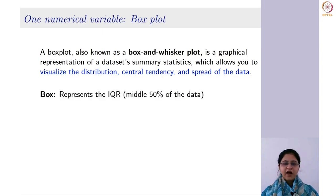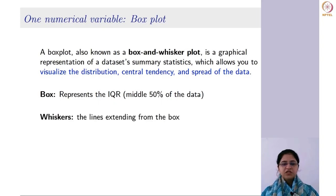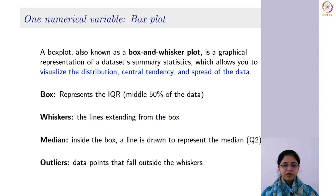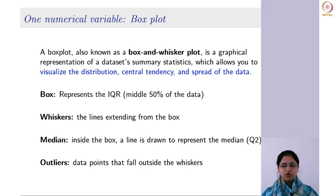Basically, you will have a box which represents the IQR — that is the middle 50% of the data. Then you will have whiskers, which are the lines extending from the box. The median is inside the box — it is a line that represents the median. You will also have outliers, if present in the dataset, and those are denoted by an asterisk or some dots.